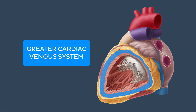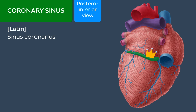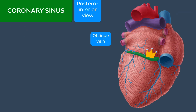Let's take a look at the greater cardiac venous system first. Drainage through the greater cardiac venous system is primarily governed by the coronary sinus. The coronary sinus is located on the inferior aspect of the left atrium, coursing within the left inferior part of the coronary sulcus. Its function is to drain the majority of deoxygenated blood of the heart into the right atrium. It is a particularly wide, channel-like vein that is initially formed by the confluence of two veins.